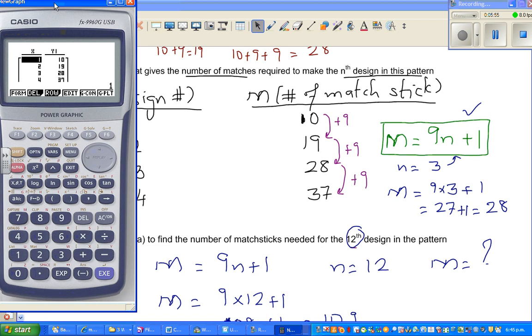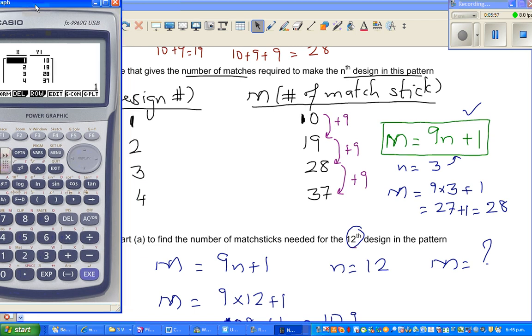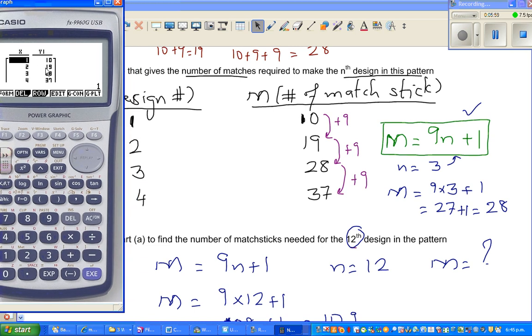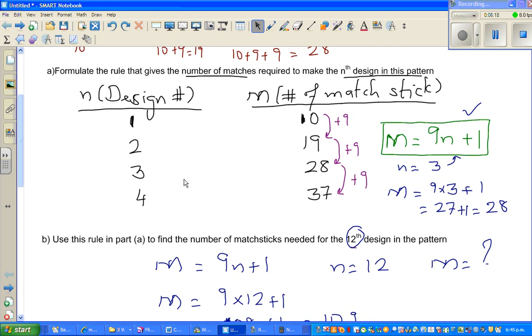We want to see whether these numbers match up with the table on the calculator. Can you see when n is 1, or when x is 1, y is 10, or when n is 1, m is 10. And let me scroll down. So 19, 28, 37. I just want to check whether the answer that I've got is right. So when n is 12, your m is 109.